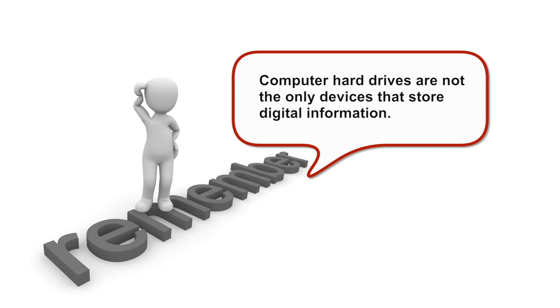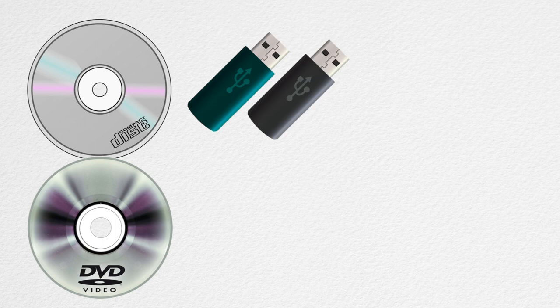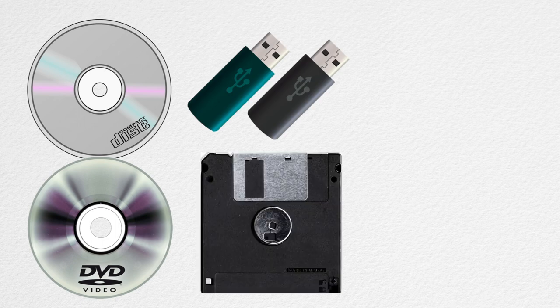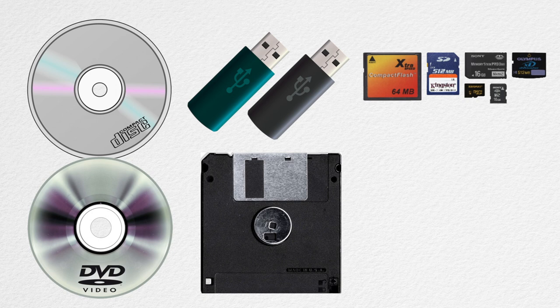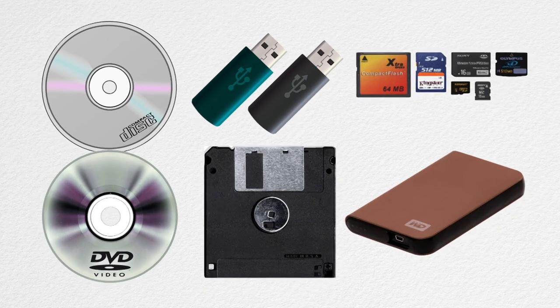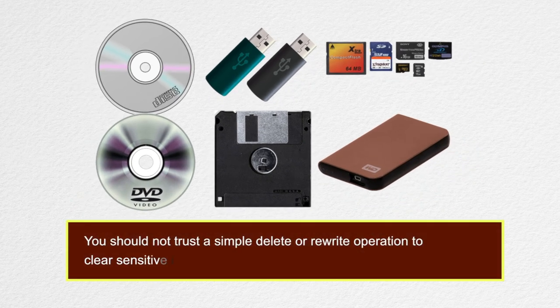Clearly, if you have a good reason to destroy all traces of that document from your filing cabinet, removing the latest copy is not going to be enough, and simply throwing away the label would be even worse. Remember that computer hard drives are not the only devices that store digital information. CDs, DVDs, USB memory sticks, floppy disks, flash memory cards from mobile phones, and removable hard drives all have the same issue, and you should not trust a simple delete or rewrite operation to clear sensitive information from any of them.